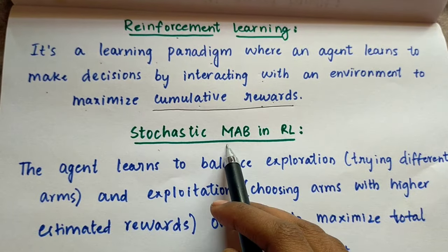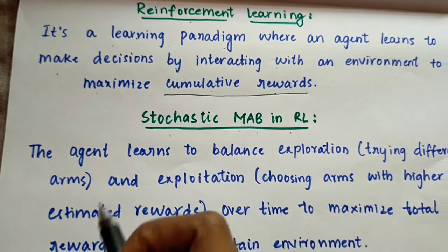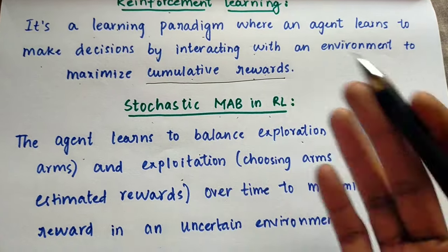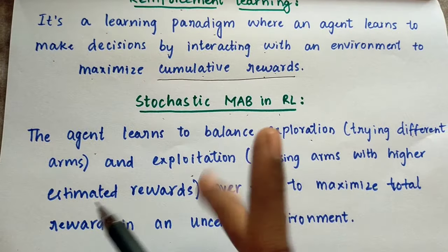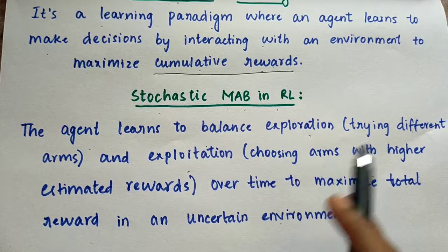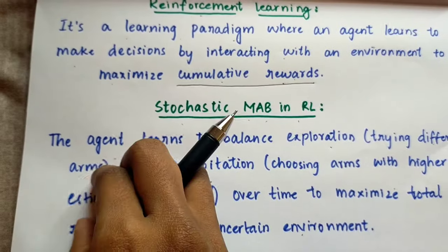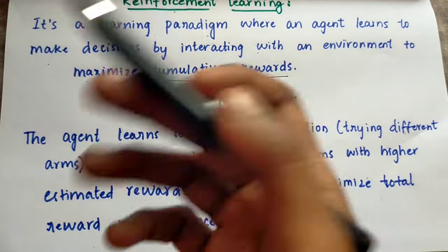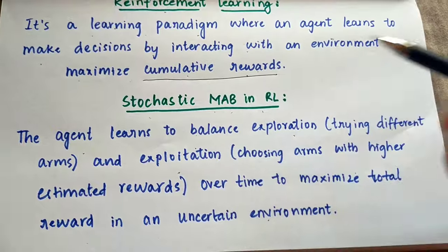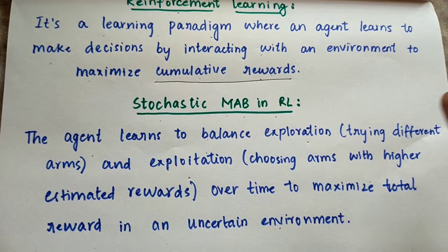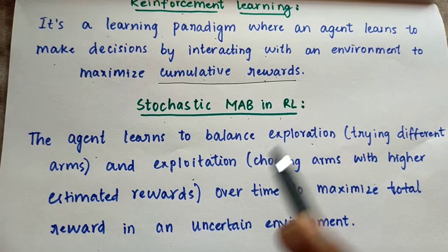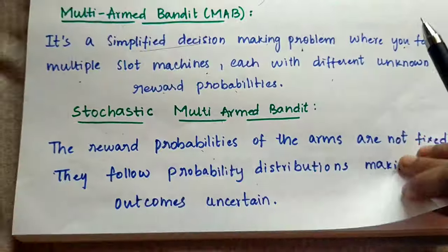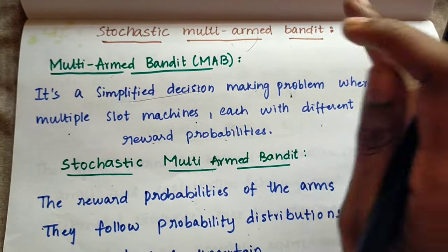In stochastic multi-armed bandit in reinforcement learning, the agent learns to balance exploration — trying different arms — and exploitation — choosing arms with higher estimated rewards. Over time, the goal is to maximize total reward in an uncertain environment. Whichever arm has higher chances of winning, the agent uses the stochastic multi-armed bandit to maximize the total reward.